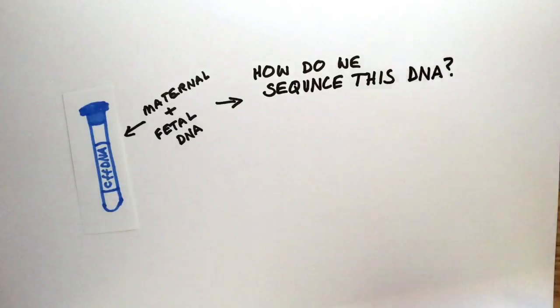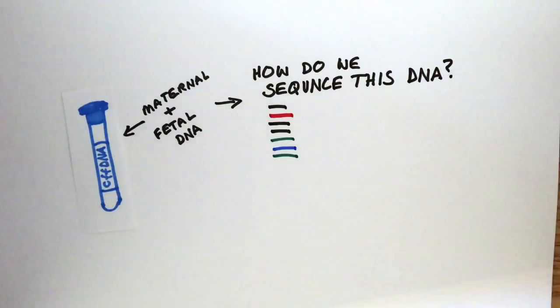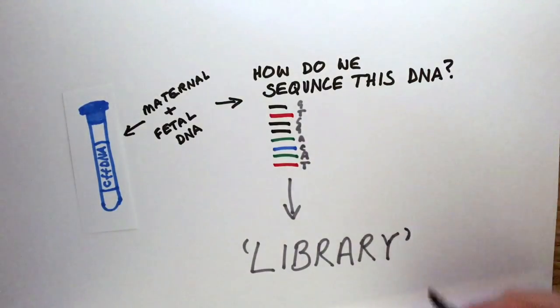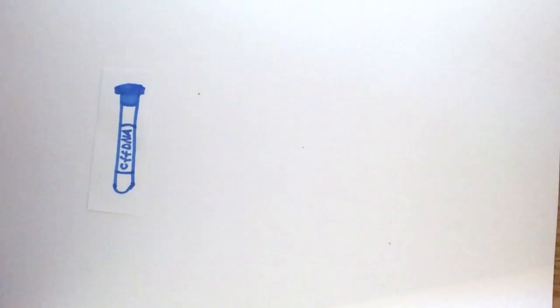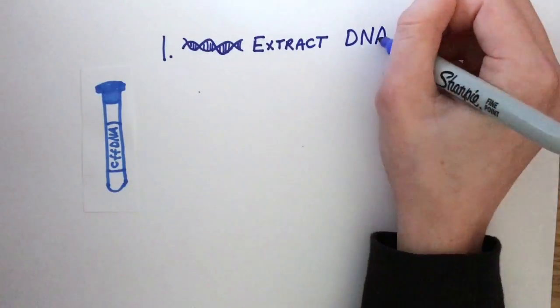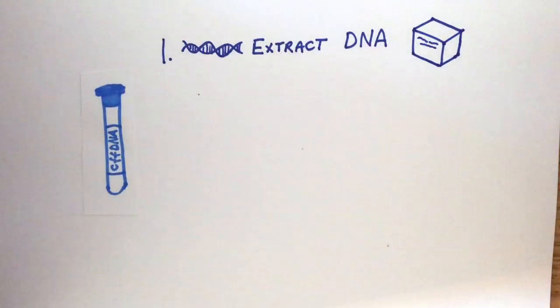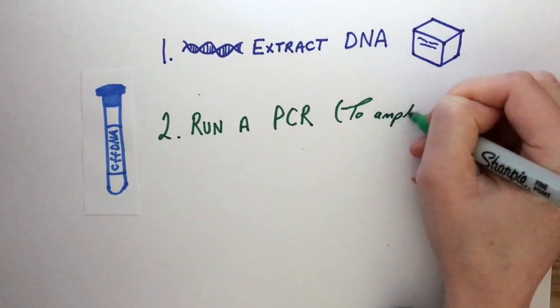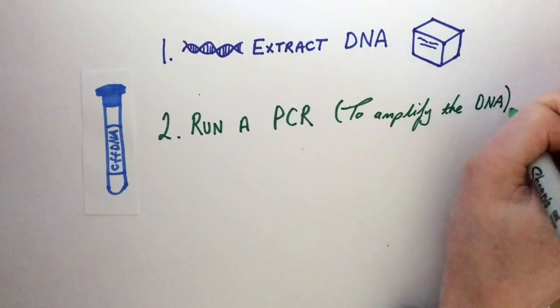So once you get the blood sample from the pregnant woman, in order for the fragments to be sequenced, it must be prepared into what's called a library. Then run a PCR. This is to amplify the DNA.